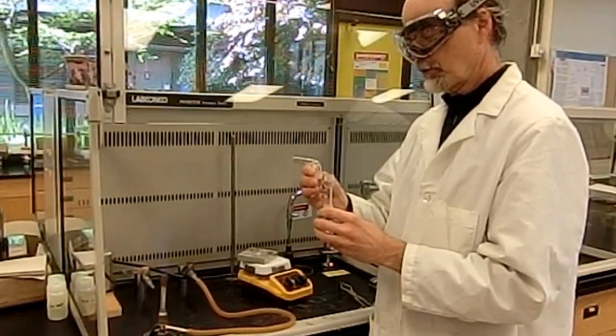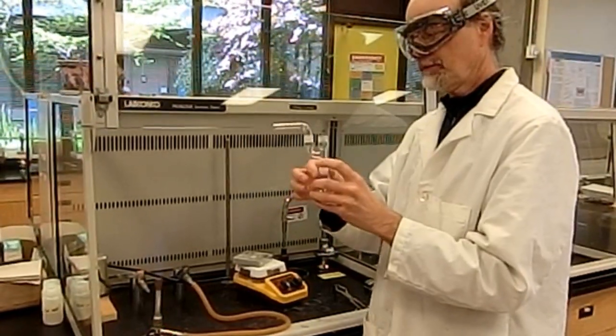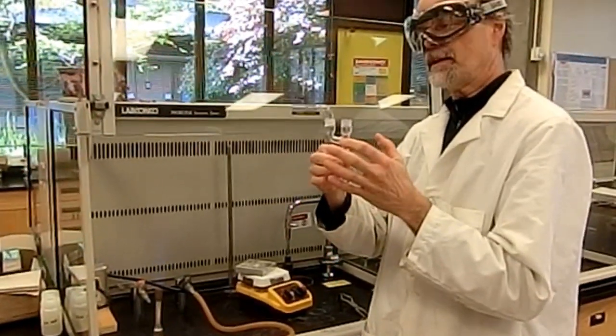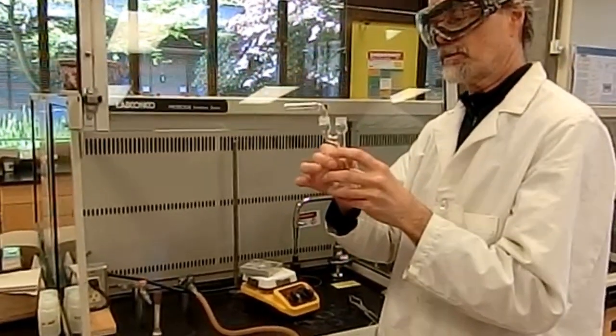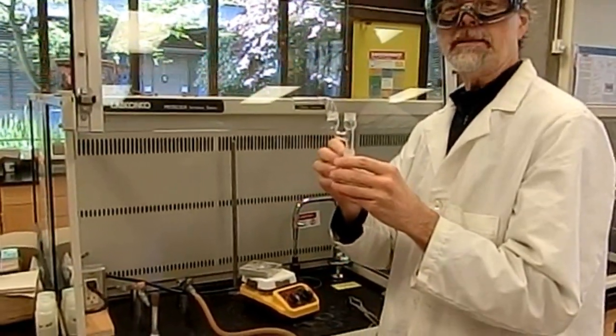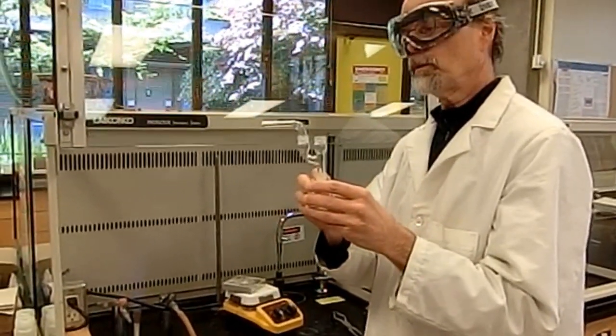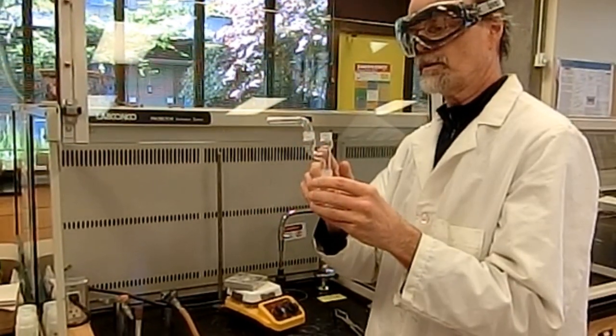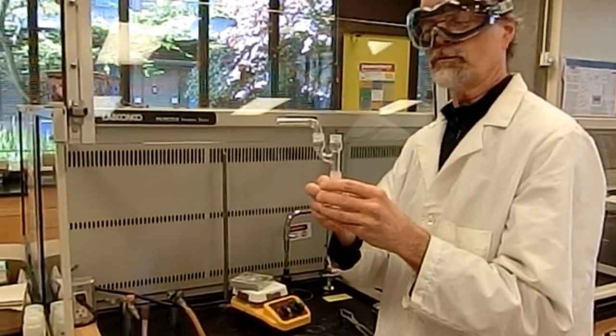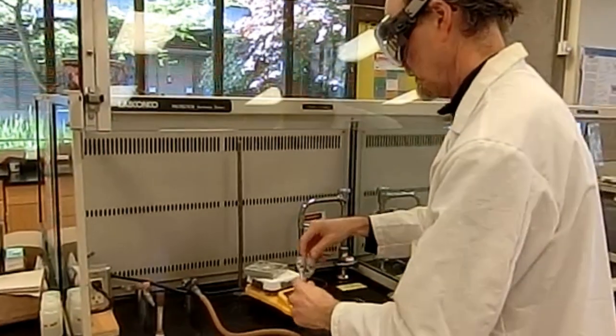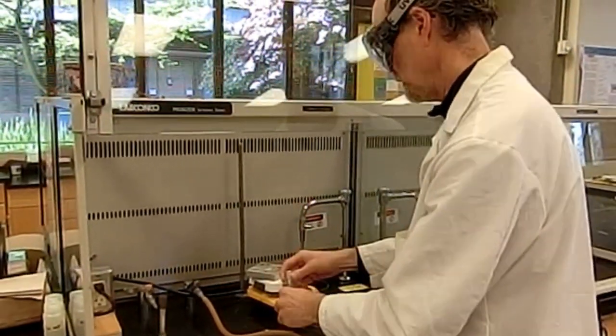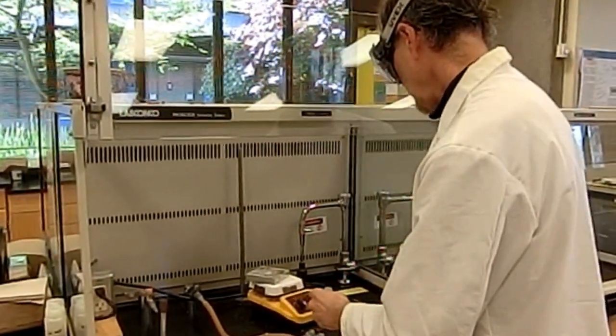So this is our glassware for the Grignard reagent, a round bottom flask, it's called the Claisen head, and then our drying tube adapter on top. Now before we start the reaction, we need to flame dry the glassware because we want to make sure that all the water that is embedded in the glassware is driven out of it. So we're going to attach all this, we have our nice blue flame going, we've got some clamps.